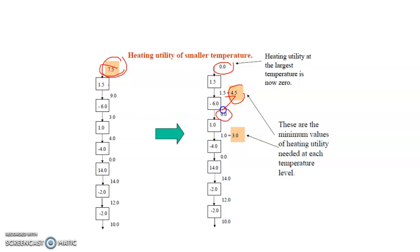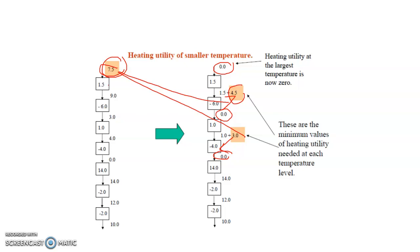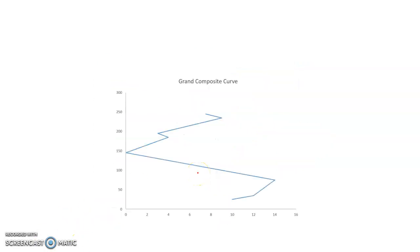Instead of supplying all the utility at one temperature, you don't supply any utility at the top interval but supply 4.5 megawatt at the next level — making the cascade value zero — and then add 3 more units at another interval, again making it zero. The total amount of energy required remains 7.5, but now it is supplied at two different temperature levels, which ensures the cost of the utility is naturally less compared to supplying all 7.5 at the highest temperature. These are the kinds of insights we get when we plot the GCC.